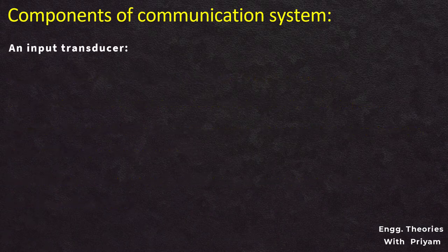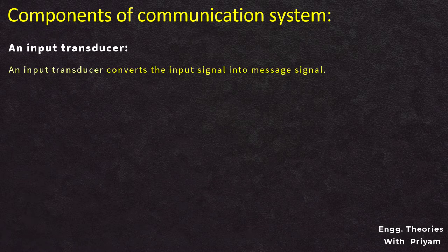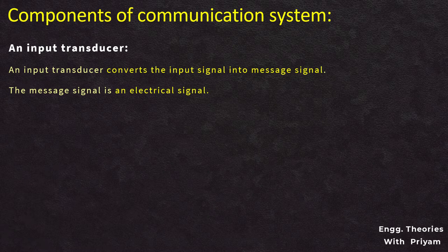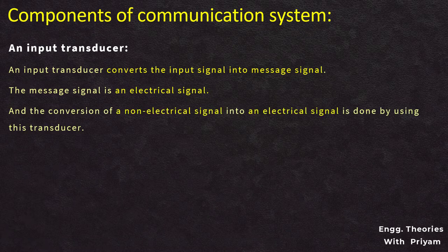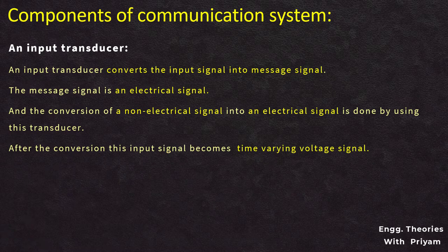The next element is the input transducer. An input transducer converts the input signal into a message signal. The input signal can be either electrical or non-electrical, while the message signal is an electrical signal. The conversion of a non-electrical signal into an electrical signal is done using this transducer. After conversion, this input signal becomes a time-varying voltage signal. Without the input transducer, there could not be any effective way to transport a non-electrical signal over great distances. For example, if the input signal is a voice signal, the input transducer will be a microphone, which will convert the voice signal into an electrical message signal.